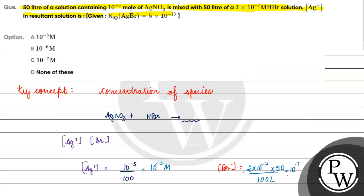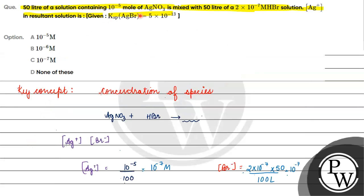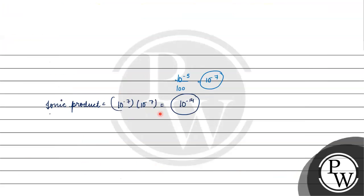The concentration of bromide ion is 10 raised to the power minus 7. So the ionic product equals 10 raised to the power minus 7 into 10 raised to the power minus 7, which is 10 raised to the power minus 14. This is less than the Ksp of 5 into 10 raised to the power minus 13, so no precipitation will take place.